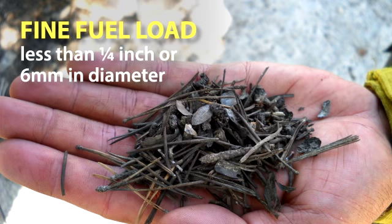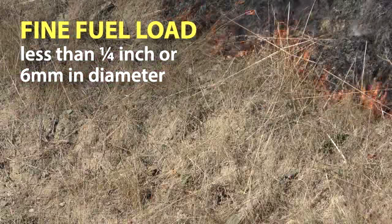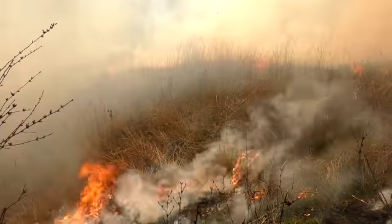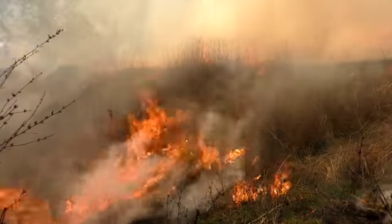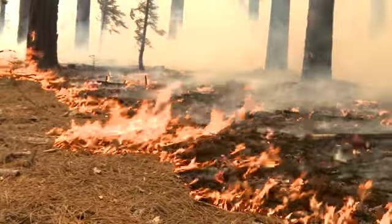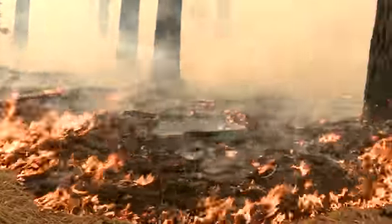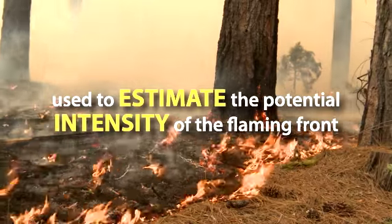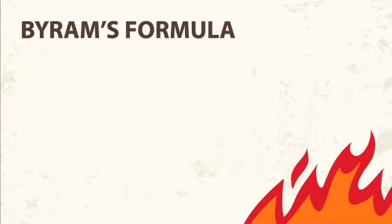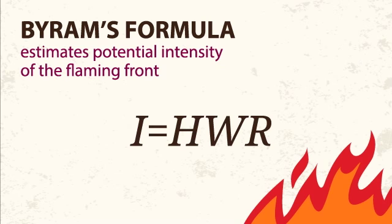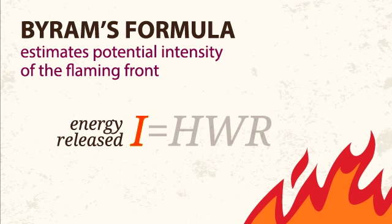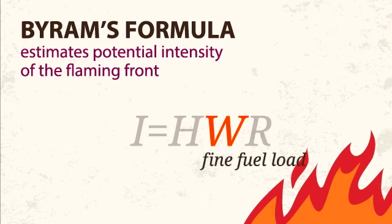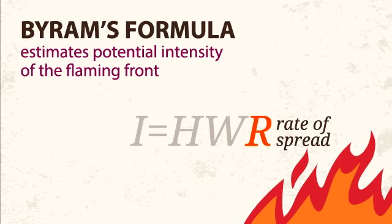Fine fuel load: some fire behavior models incorporate only fine fuels into their calculations. These are fuels less than one quarter inch or six millimeters in diameter, such as a field of grass or a bed of pine needles. These are most likely to form a continuous fuel bed consumed in the flaming front of a surface fire. Fine fuel loading can also be used to estimate the potential intensity of the flaming front, calculated by Byram's formula: I equals H times W times R, where I is the energy released during combustion by the flaming front per unit of time, H is the heat content of the fuel, W is the fine fuel load, and R is the fire's rate of spread.